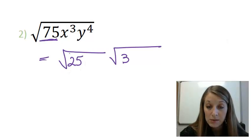So 25 times 3 gives me 75. And again, 25 is my good pi because it is a square.